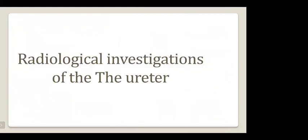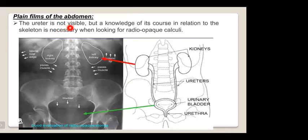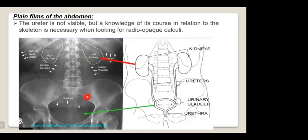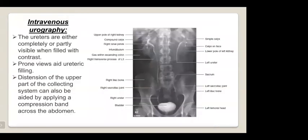For radiological investigation of the ureter, on plain film, the ureter is never seen, but knowledge of its course in relation to the skeleton is necessary when looking for radio-opaque calculi. On IVU, the ureters are either completely or partly visible when filled with contrast; prone views aid ureteric filling, and compression bands across the abdomen can aid distension of the upper collecting system.